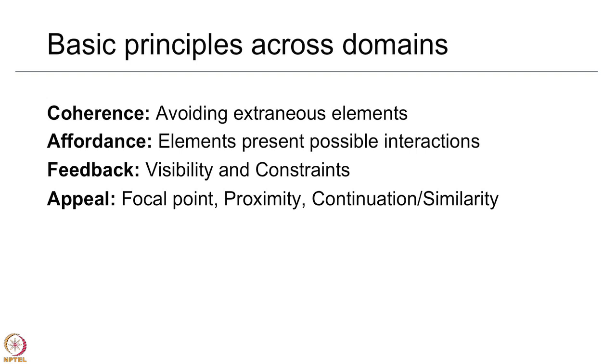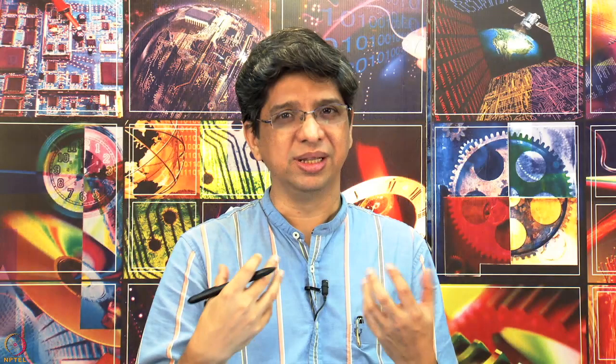The first one is coherence, which comes from multimedia design and talks about avoiding extraneous elements. We also need to talk about affordance, because when we are entering a digital domain, the interaction with the content and the user is through the appearance of that content. By affordance we mean that the elements present on screen suggest the possible interactions.